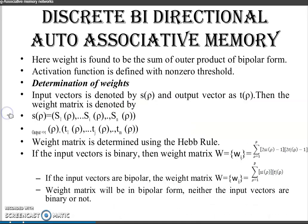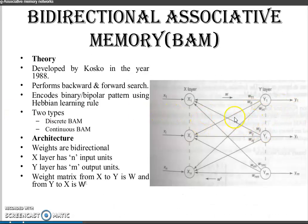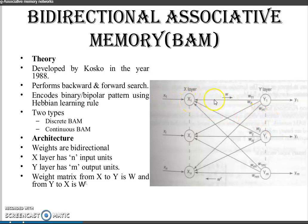Now we discuss the Bidirectional Associative Network structure. Calculate the net input. Taking values of y_j and x_i, we calculate y_j times w_ij and x_i times w_ij. This is the calculation of y_j w_ij value and x_i w_ij value.